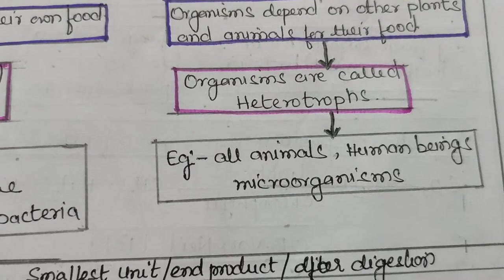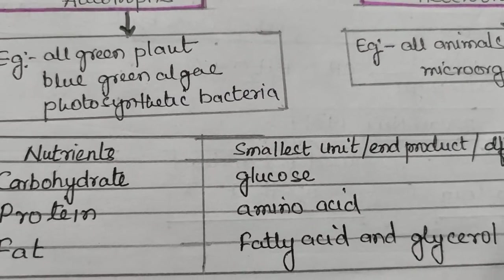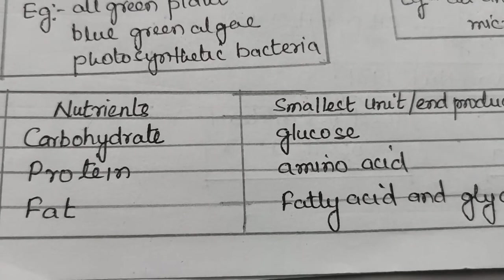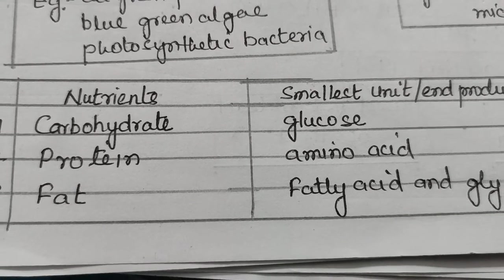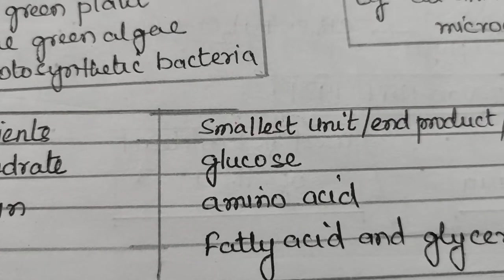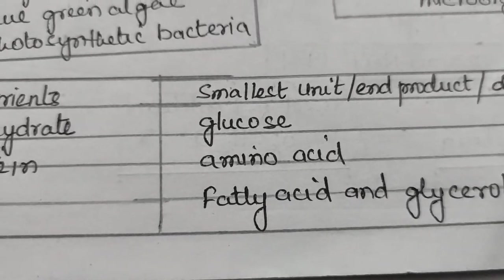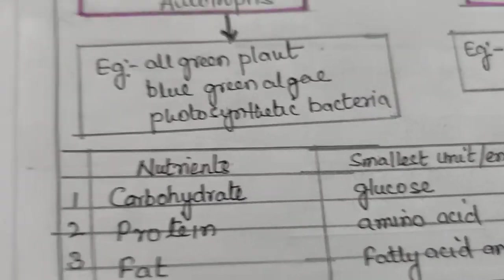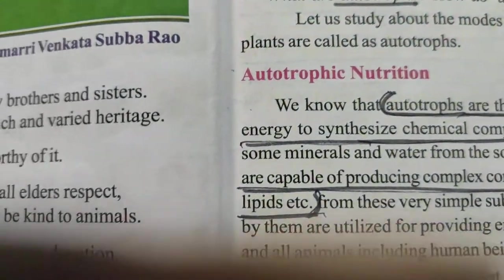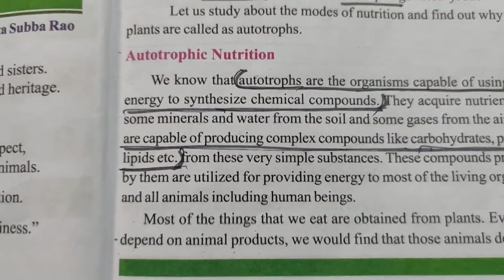Whatever food is formed by the plant is in the form of carbohydrate, protein, and fat. The smallest unit of carbohydrate is glucose; the smallest unit of protein is amino acid; and the smallest unit of fats is fatty acid and glycerol. So the food prepared by the plant is in the form of carbohydrates, proteins, and lipids.